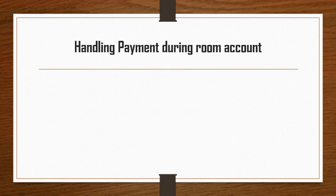The topic is handling payment during room account. What is a room account? Suppose a guest who is staying at your hotel dines in the hotel restaurant or bar — he or she may not be willing to pay instantly but would request you to post the food bill to their room account. In that situation, as a service person, you have to follow some guidelines. First, check the customer's identity: ask the guest for identification, such as showing their room key or card, or mentioning their room number as proof.